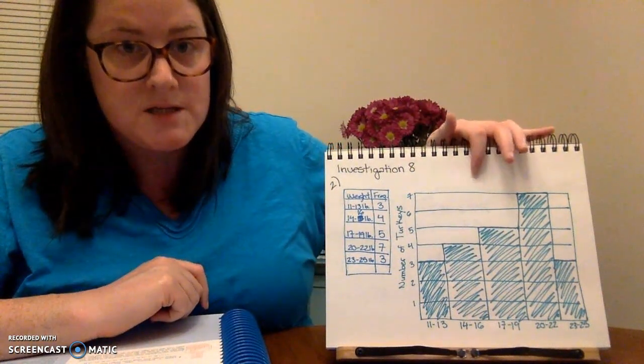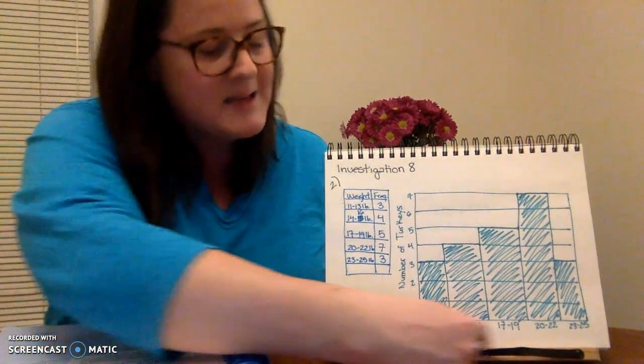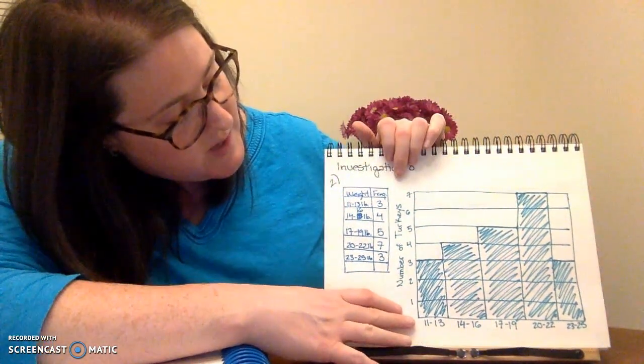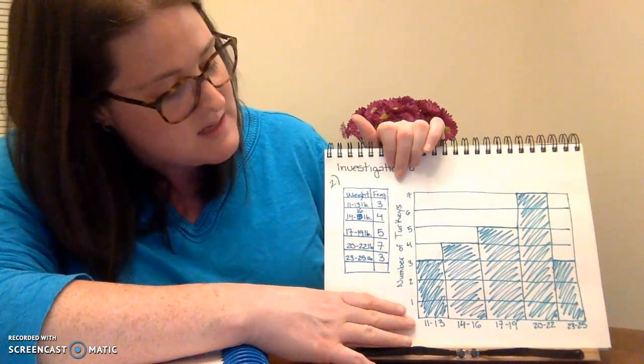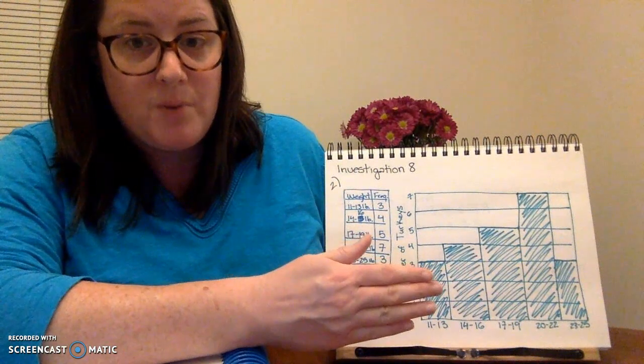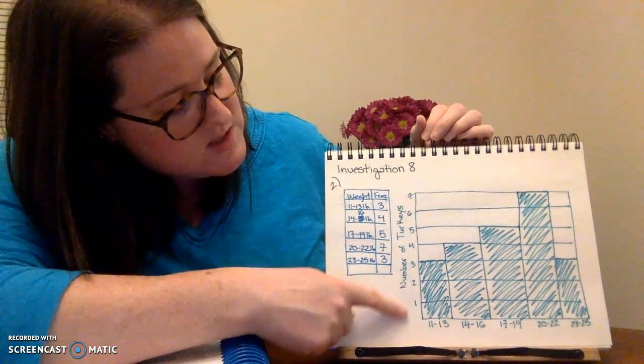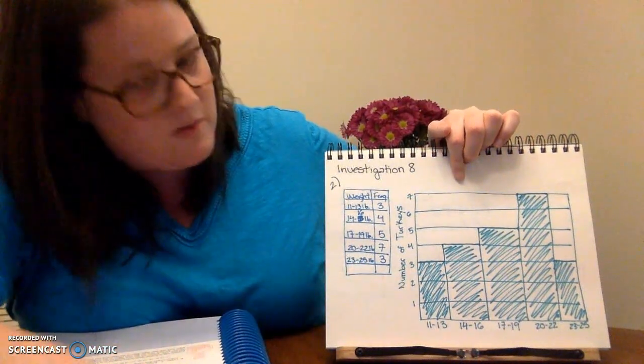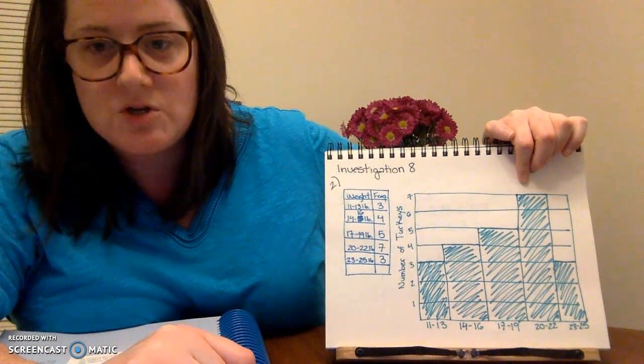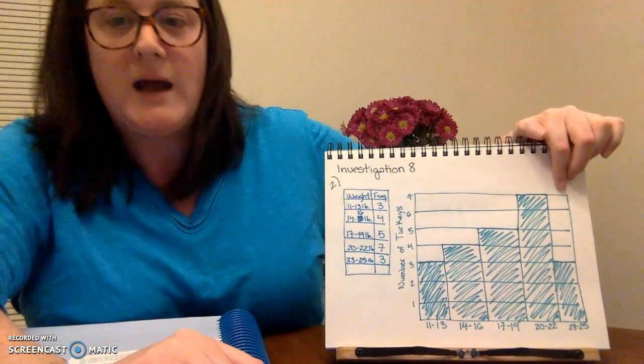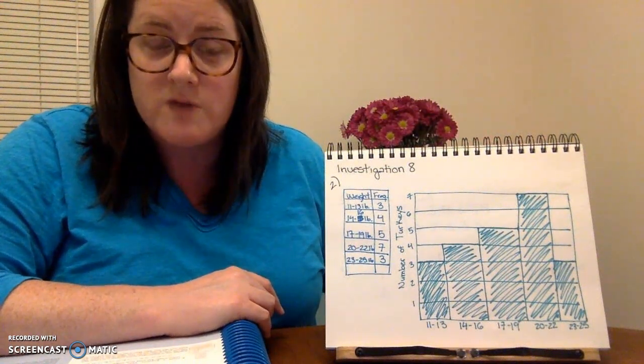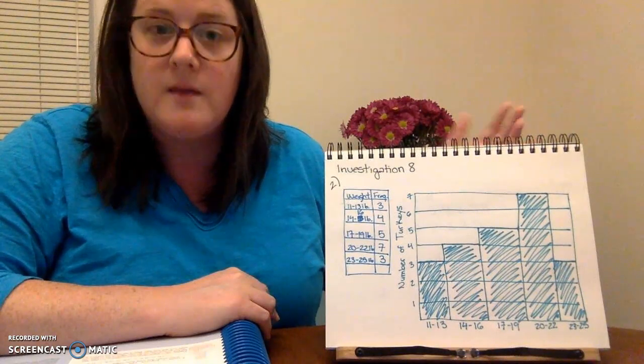Next, I've made my histogram. Along my x-axis, along my horizontal axis, I have my weight intervals. Along my y-axis, my vertical axis, I have the number of turkeys in each interval. Notice that there are no spaces between the bars on my histogram. 11 to 13, 3 turkeys. 14 to 16, 4 turkeys. 17 to 19 is 5 turkeys. 20 to 22 is 7 turkeys. And then 23 to 25, we're back at 3 turkeys. That is what my histogram should look like. You can pause here and correct yours that you've done.